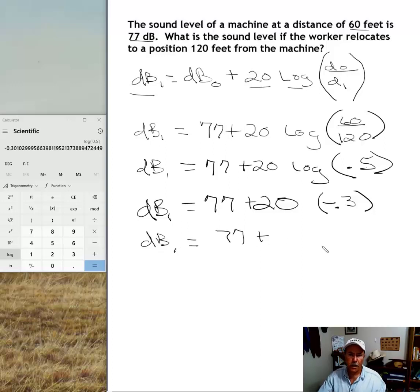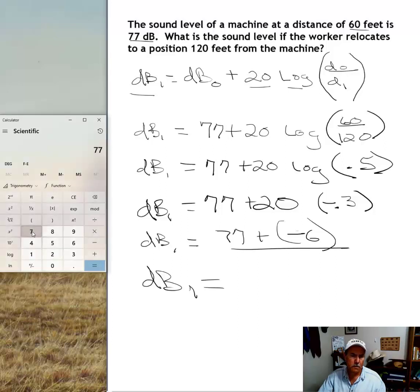Now 20 times negative 0.3 equals negative 6. Now the last step is just doing that addition there. 77 plus negative 6 equals 71.